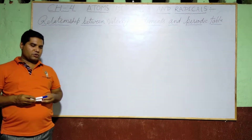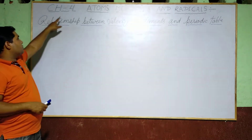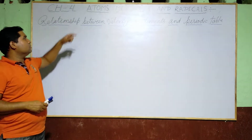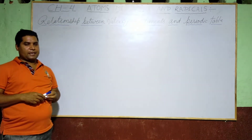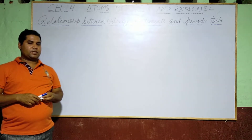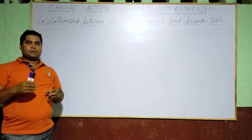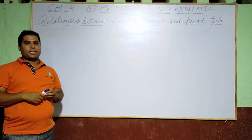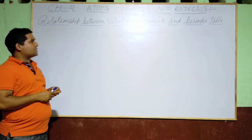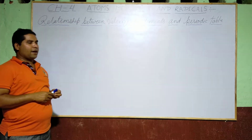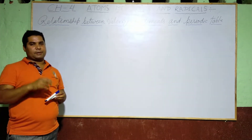I am going to continue Chapter 4: Atoms, Molecules and Radicals. In this video I am going to explain a new topic — relations between the balancing of elements and the periodic table.